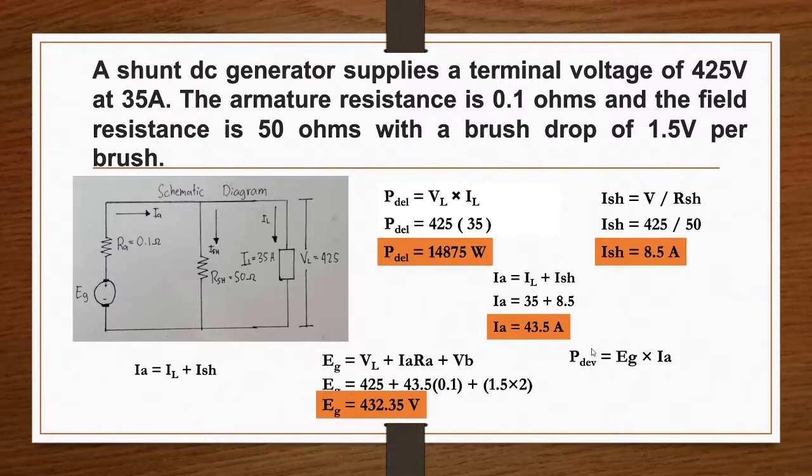For power developed: power developed equals generated voltage times armature current. So 432.35 volts times our armature current of 43.5 gives us a power developed of 18,807.23 watts.